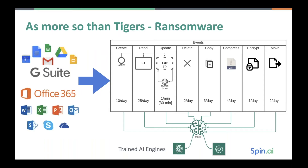Here's an architecture — highly parallel. For both G Suite and Office 365, we use the API to connect with the systems across all of your users and look at what behaviors are happening. We look at CRUD behaviors — create, read, update, delete — as well as copying, compressing, encrypting, and moving. There's a nominally normal frequency of these events. You may read 25 docs a day but update one once a minute for 30 minutes as you're editing. What doesn't happen a lot is encryption. So we can detect things like overly rapid deletions, encryptions, and moving using a network of trained AI engines that talk to your cloud system through the API.